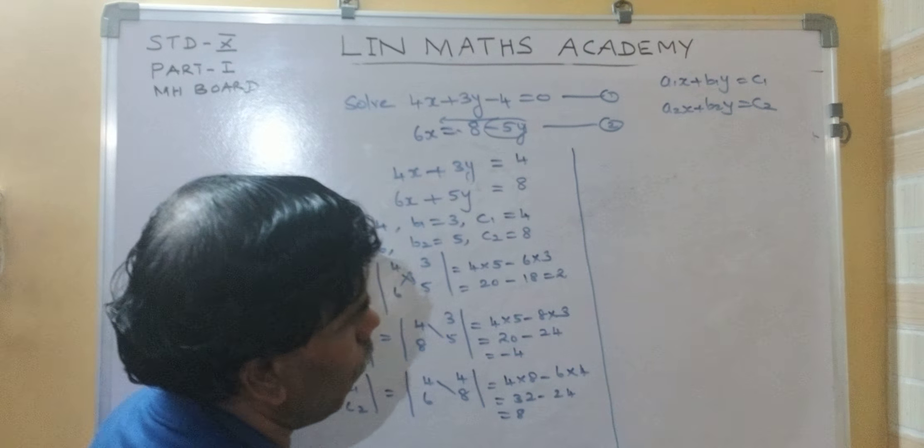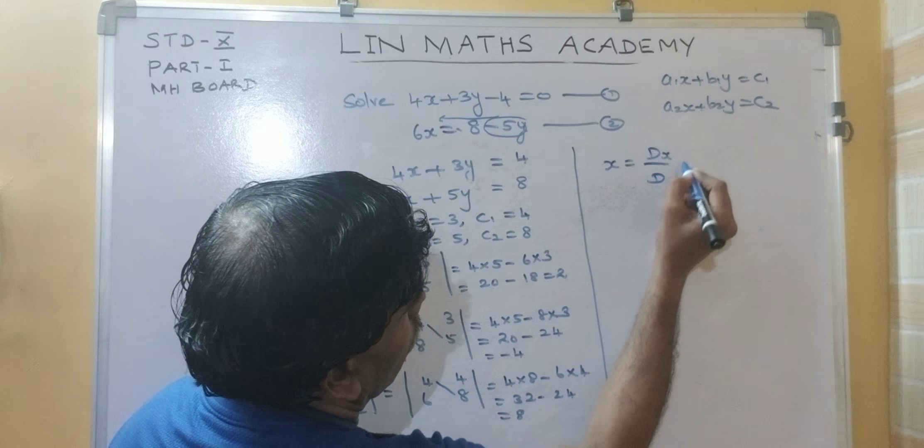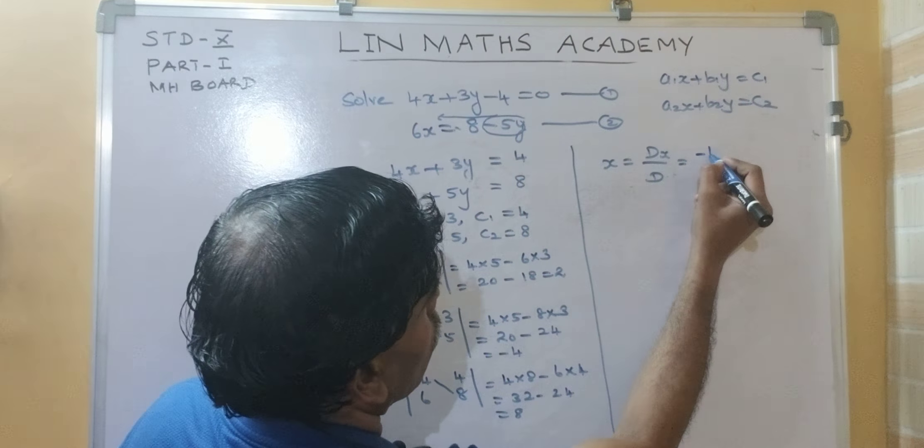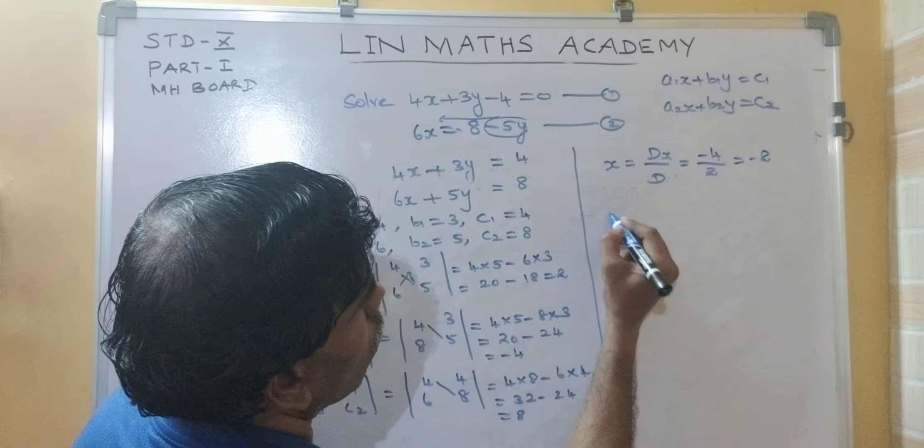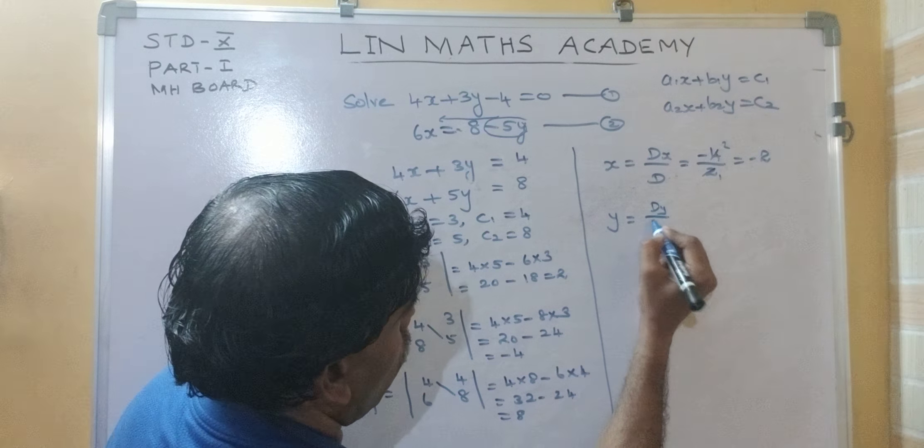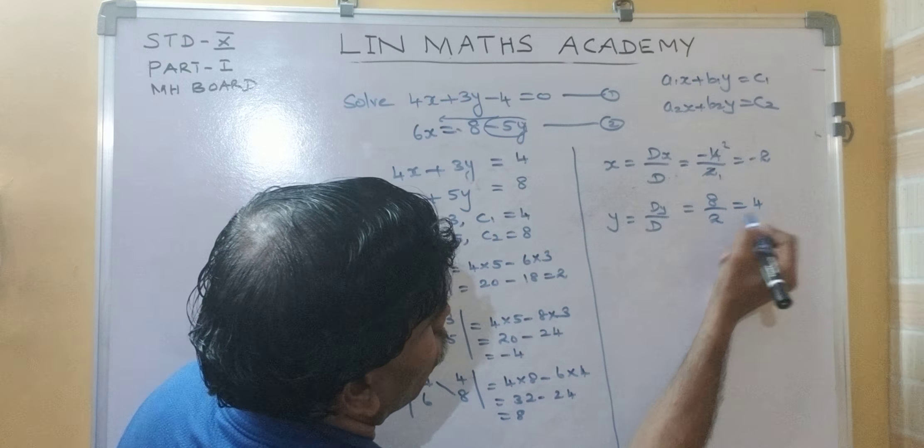Now, what is x? dx upon d, which is equal to what is dx here? minus 4 upon 2 is equal to minus 2. What is y?